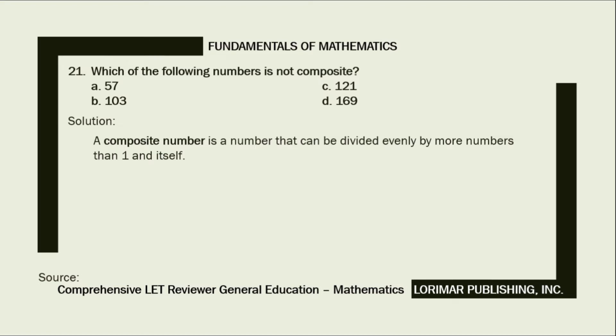A composite number is a number that can be divided evenly by more numbers than 1 and itself. It is the opposite of a prime number.